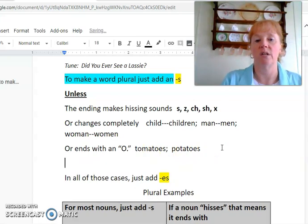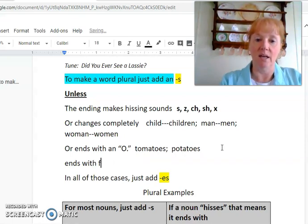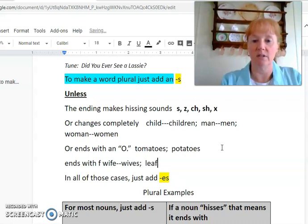Also, this isn't in our song, but another rule is that if it ends with an F, or the sound of an F, a lot of times that word, the F, will change to V. Okay? So, the word wife becomes wives. Leaf becomes leaves.